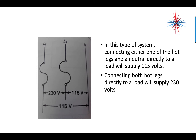In this type of system, connecting either one of the hot legs and neutral directly to the load will supply 115 volts. Connecting both hot legs directly to a load will supply 230 volts. More often than not, a light switch, small appliance, TV, or satellite dish receiver will be at L1 or L2 to neutral. Your cooktops, dryers, air handlers, and condensing units would go L1 to L2 and get 230 volts.